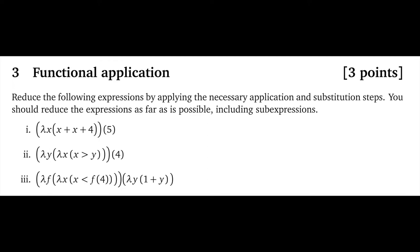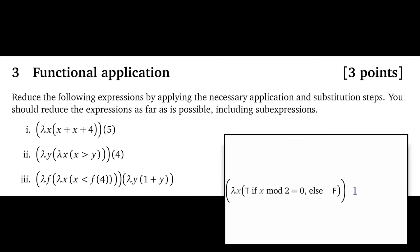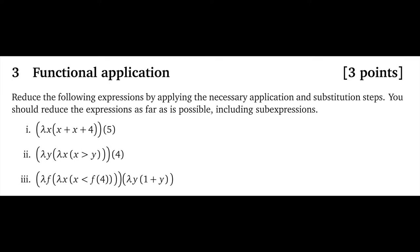Question three, function application, worth three points. Reduce the following expressions by applying the necessary application and substitution steps. You should reduce the expressions as far as possible, including sub-expressions. Some general tips: first, when you apply a function to an argument, be sure to knock off the outermost lambda and only that one. Second, be sure to change all occurrences of the target variable to the argument. Third, don't be afraid if lambdas linger — a common error is assuming every operation will eliminate all lambdas when there aren't enough arguments. Fourth, do make sure you perform all necessary lambda conversions, as there can be internal sub-expressions with lambdas that can be knocked out.